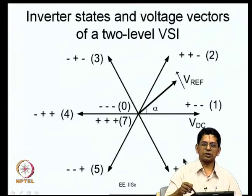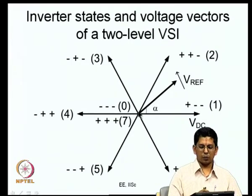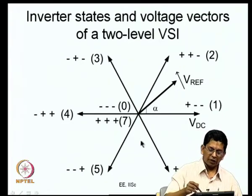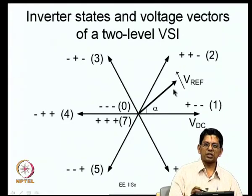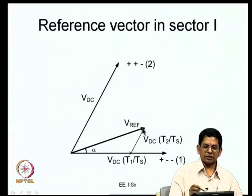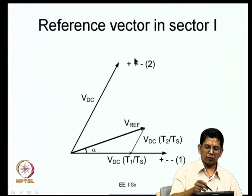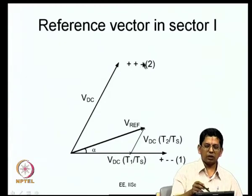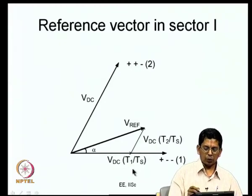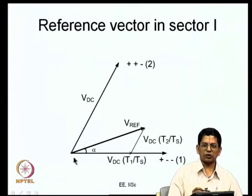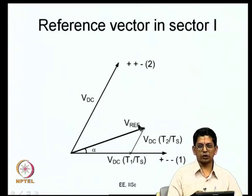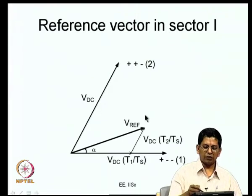There are six active vectors from six active states and two zero states producing the null vector. In space vector PWM we have a revolving reference vector, sampled once every sub-cycle duration T_s, and we try to produce an average voltage vector equal to that sample. If the sample falls in sector 1 — between vector 1 and vector 2 — we produce it by time-averaging the null vector, vector 1, and vector 2: applying vector 1 for T1 seconds, vector 2 for T2 seconds, and the null vector for the remaining T_z seconds. This is done similarly in different sub-cycles.